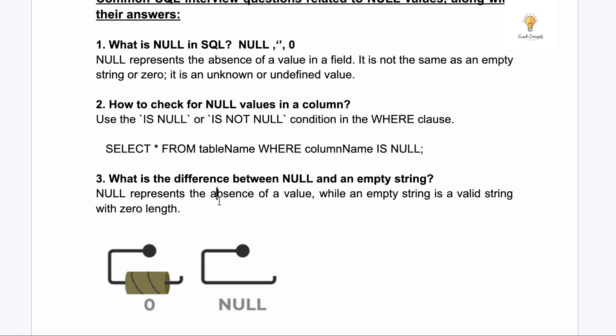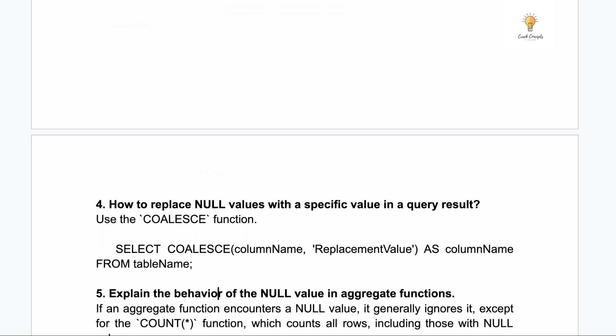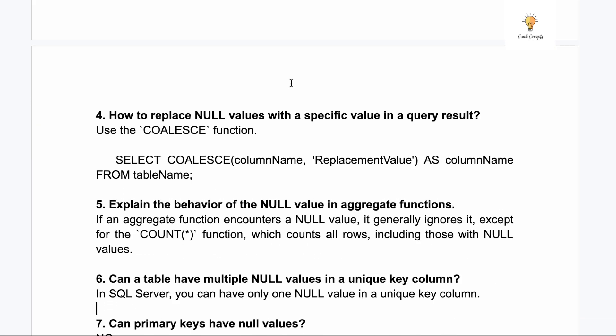Third question: what is the difference between NULL and an empty string? NULL represents the absence of a value, while an empty string is a valid string with zero length. An empty string or zero is still a valid value, but NULL is the complete absence of any value.